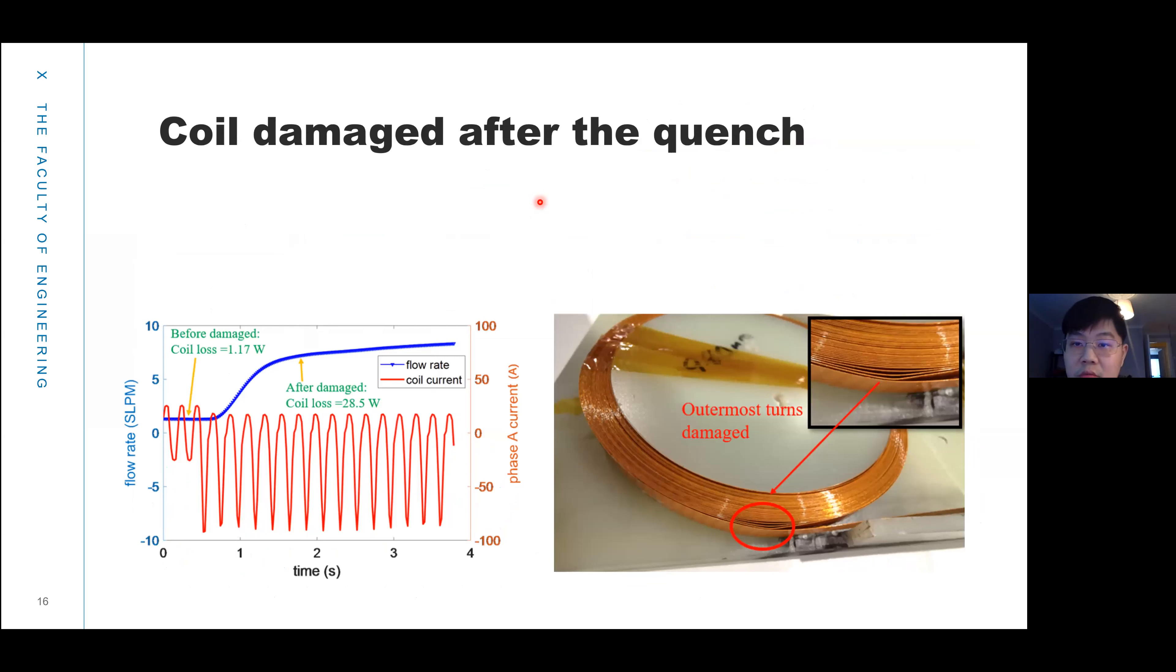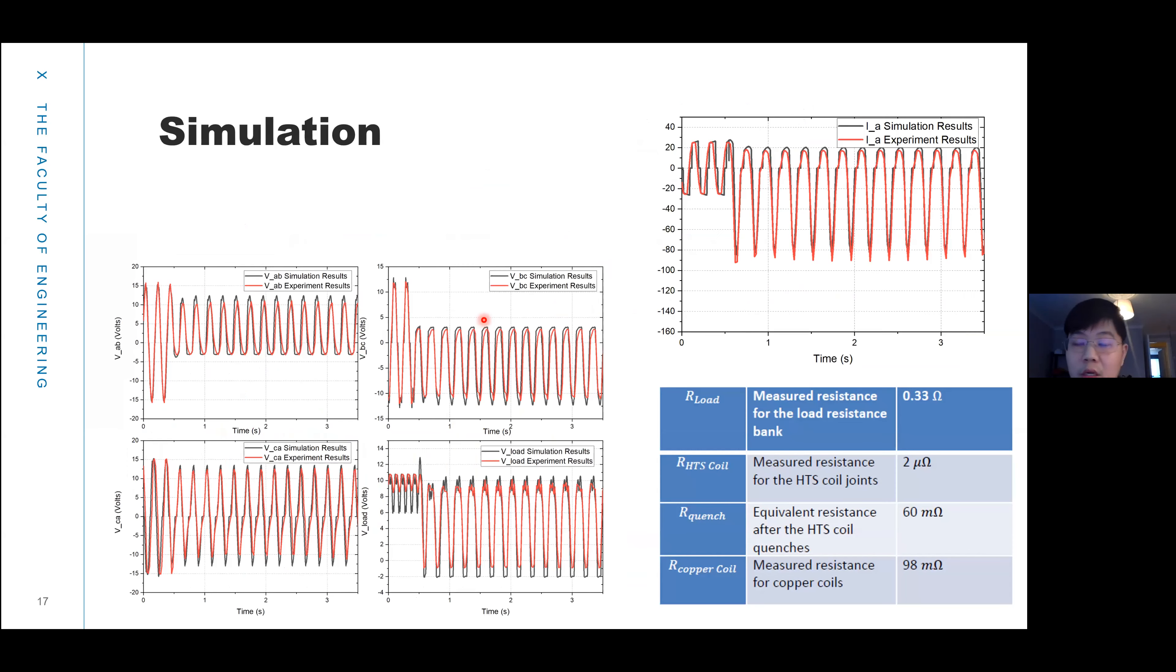After the short circuit, we brought the coil out and found the outermost turn has damage. We also did simulation using the parameters measured. This is the resistance for the HTS coil before the short circuit, and this is the resistance after the short circuit. We measured the copper coil resistance for phase B and phase C and did a simulation. We found the simulation result and the experimental result agreed well.